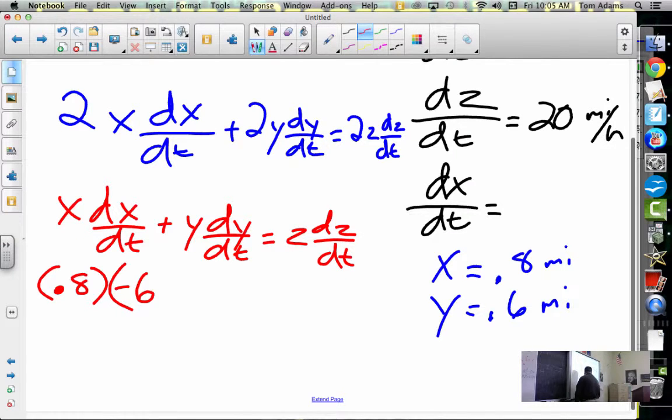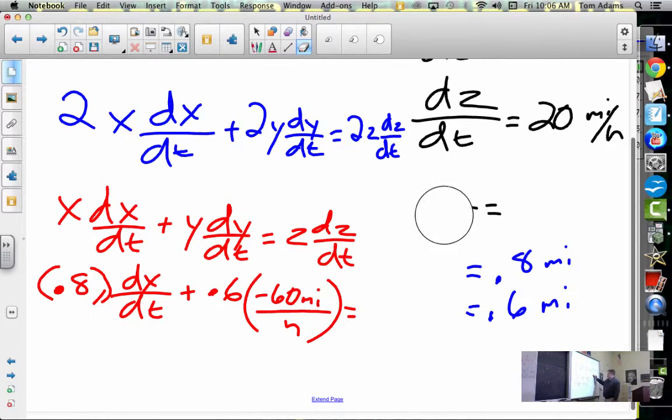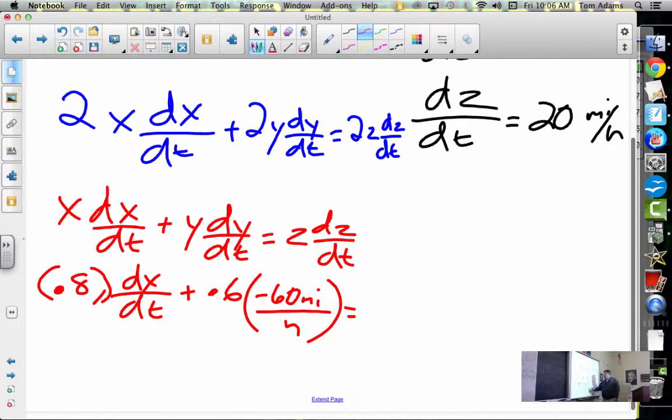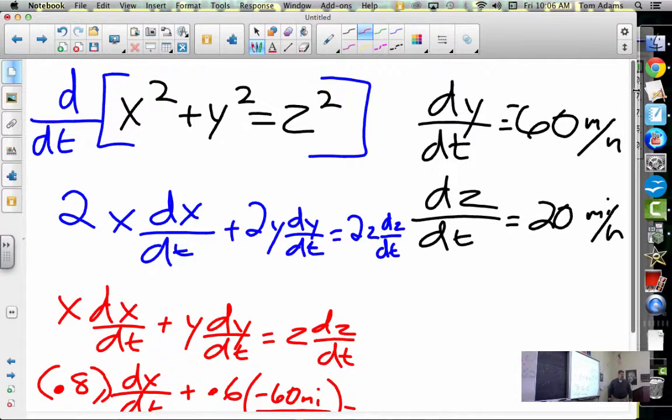X is 0.8 times dx/dt, which is what we're solving for. So that one just stays dx/dt plus Y, which is 0.6, times dy/dt, which was negative 60 miles per one hour. Is equal to Z, what was Z? Do we know what Z was? We're solving for dx/dt. We can find Z though, right?